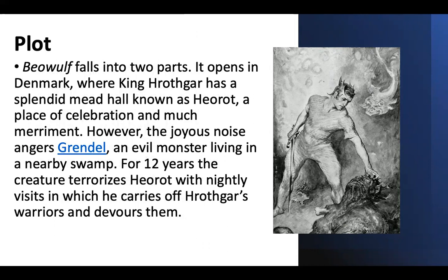The plot of Beowulf falls into two parts. It opens in Denmark, where King Hrothgar has a splendid mead-hall known as Heorot — a place of celebration and merriment. However, the joyous noise angers Grendel, an evil monster living near the swamp. For 12 years the creature terrorizes Heorot with nightly visits in which he carries off Hrothgar's warriors and devours them.